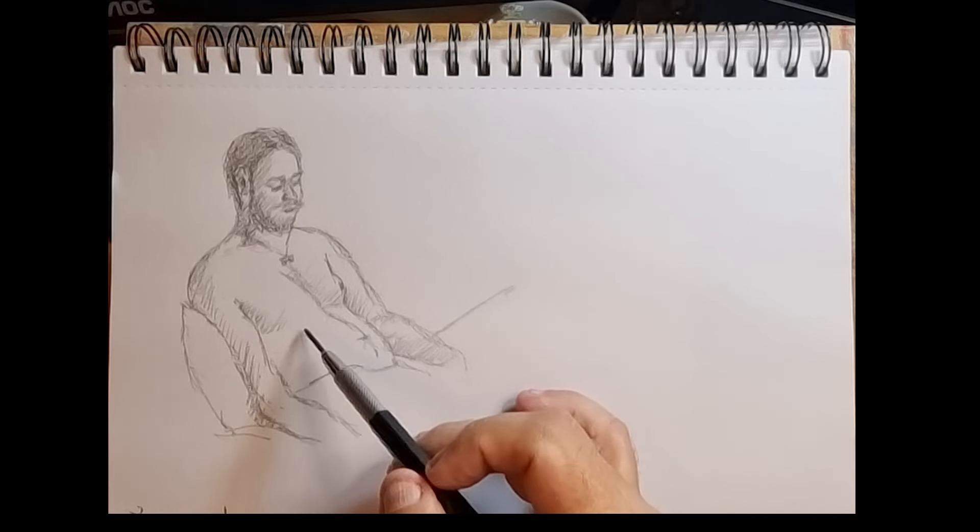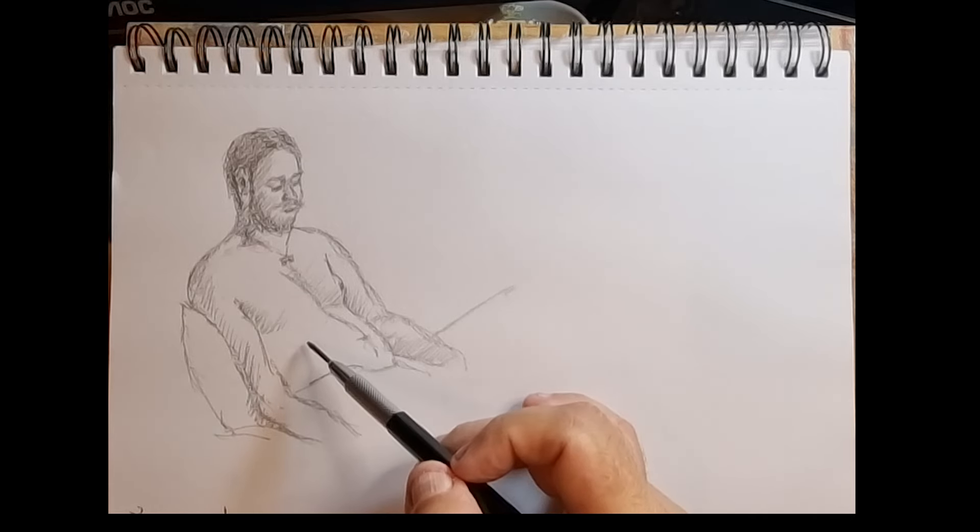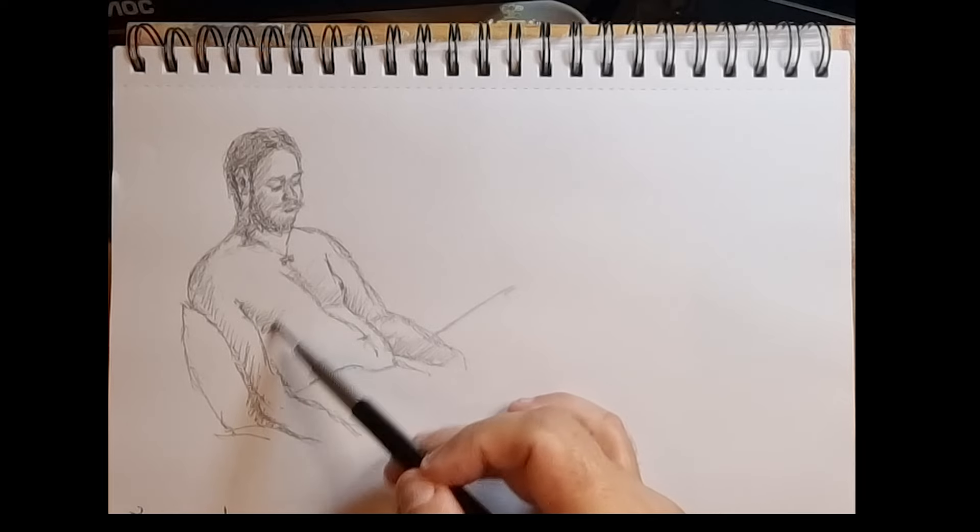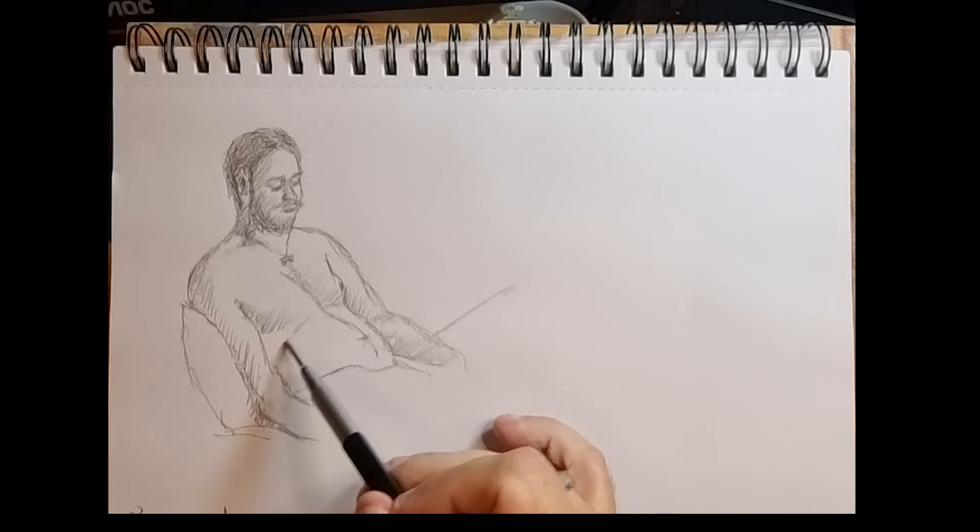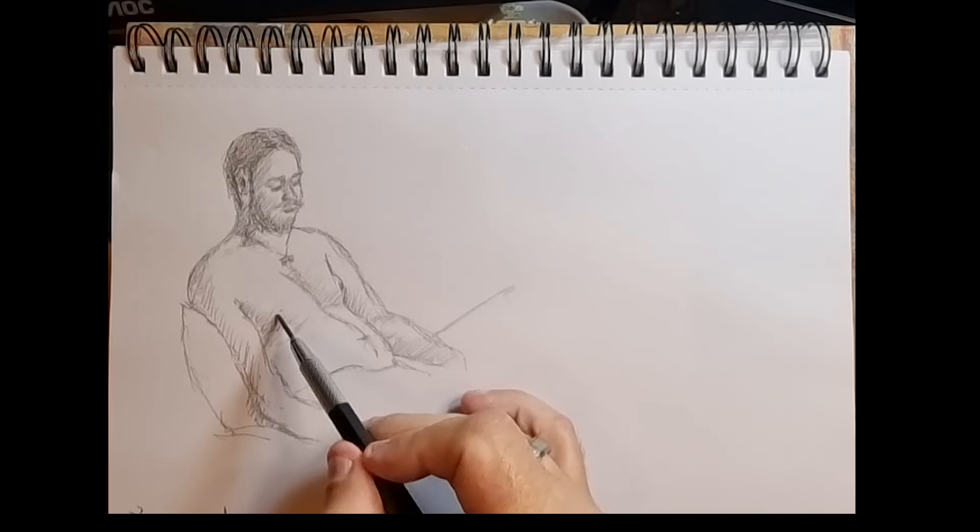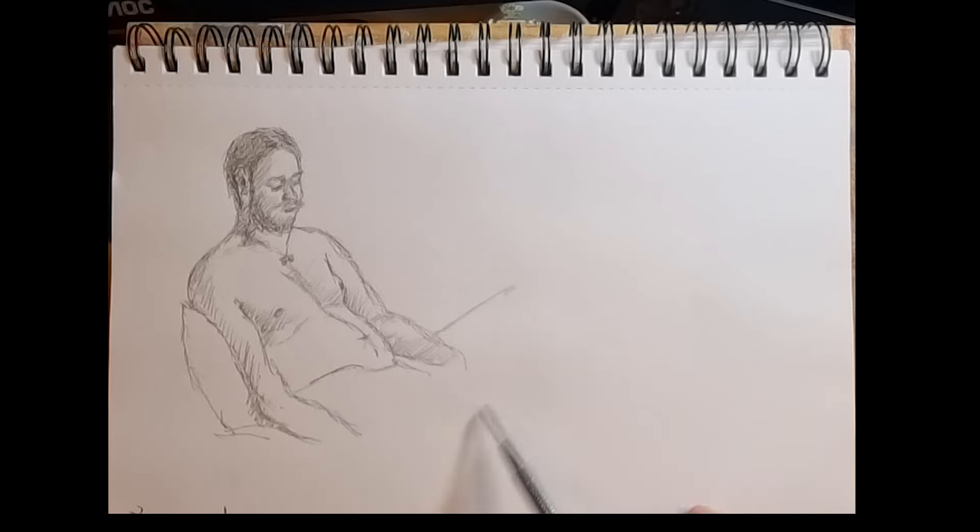Now I've got the armpit in the right place I can start adding the shadow under the right hand breast. Placement of the nipple now, and again looking at where it is in relation to the features on the face that I've already added. The nipple on the other side should be lower because this shoulder on this side is lower.